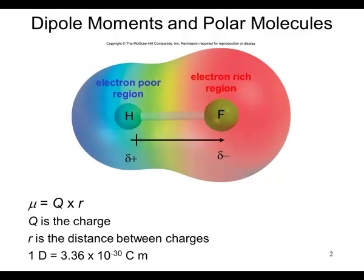This leaves a slightly negative charge. This is measured by a dipole moment, mu, which equals the charge times r, the distance between the charges. The units are Debye's, 3.36 times 10 to the minus 30th Coulomb meters.